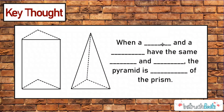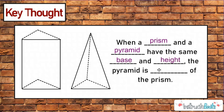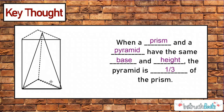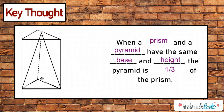Here's our key thought for today, and it's very similar to our last square and rectangular pyramid lesson. When a prism and a pyramid have the same base and height — not slant height, but height — the pyramid is going to be one-third of the prism. The base is exactly the same and the height is exactly the same, so the pyramid is one-third the volume of the prism. In real life, you can fill up three pyramids with water and pour them into the prism to prove it.